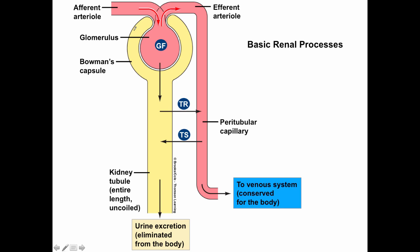The first process, GF, stands for glomerular filtration. TR stands for tubular reabsorption, and TS stands for tubular secretion. The cartoon representation shows the nephron as a straight yellow tube — Bowman's capsule, proximal tubule, loop of Henle, distal tubule, and collecting duct — with the vascular component shown as the afferent arteriole, glomerular capillaries, efferent arteriole, and peritubular capillaries.